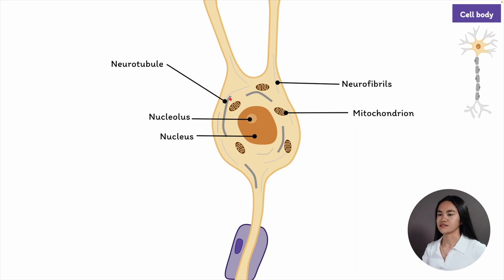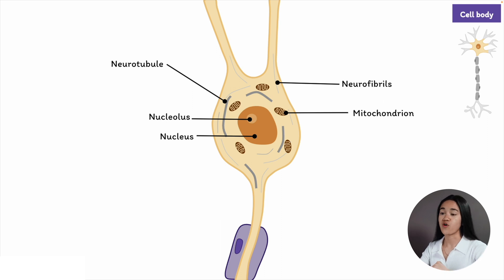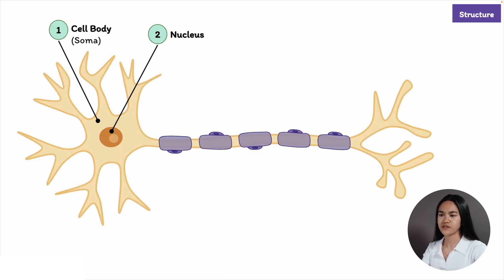Then there's the cytoplasm, which houses various organelles. It takes up the remaining intracellular space. That's the cell body. Returning to the overall diagram, let's move on to the next structure.